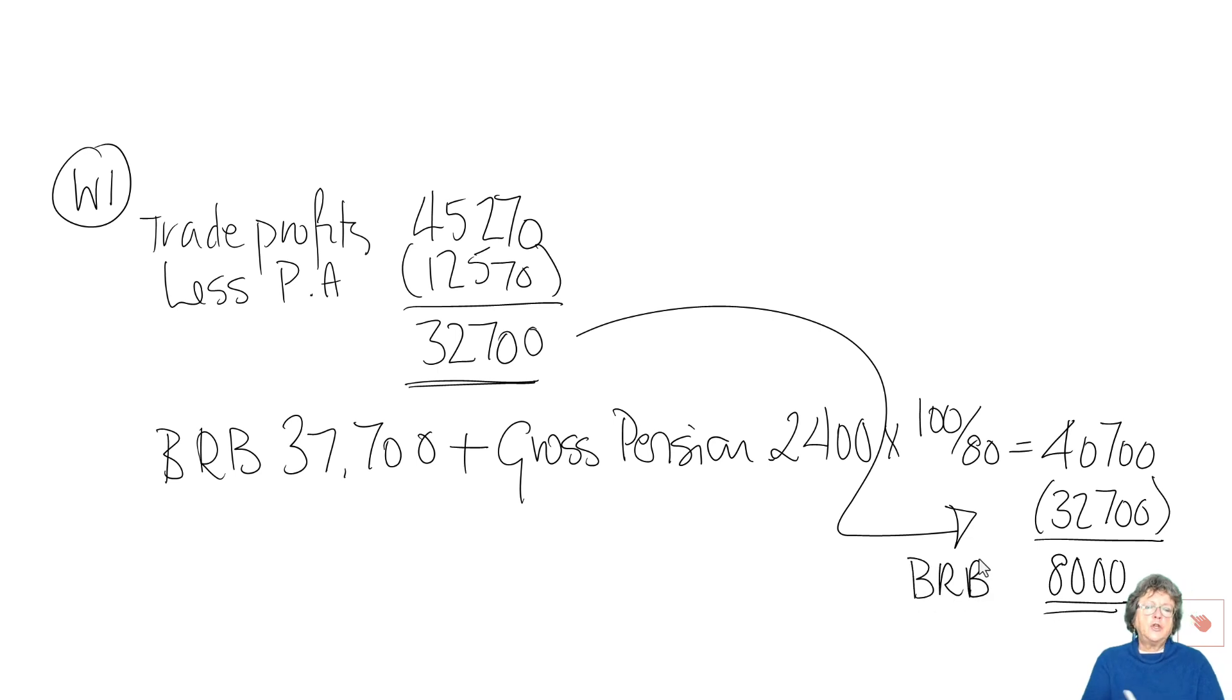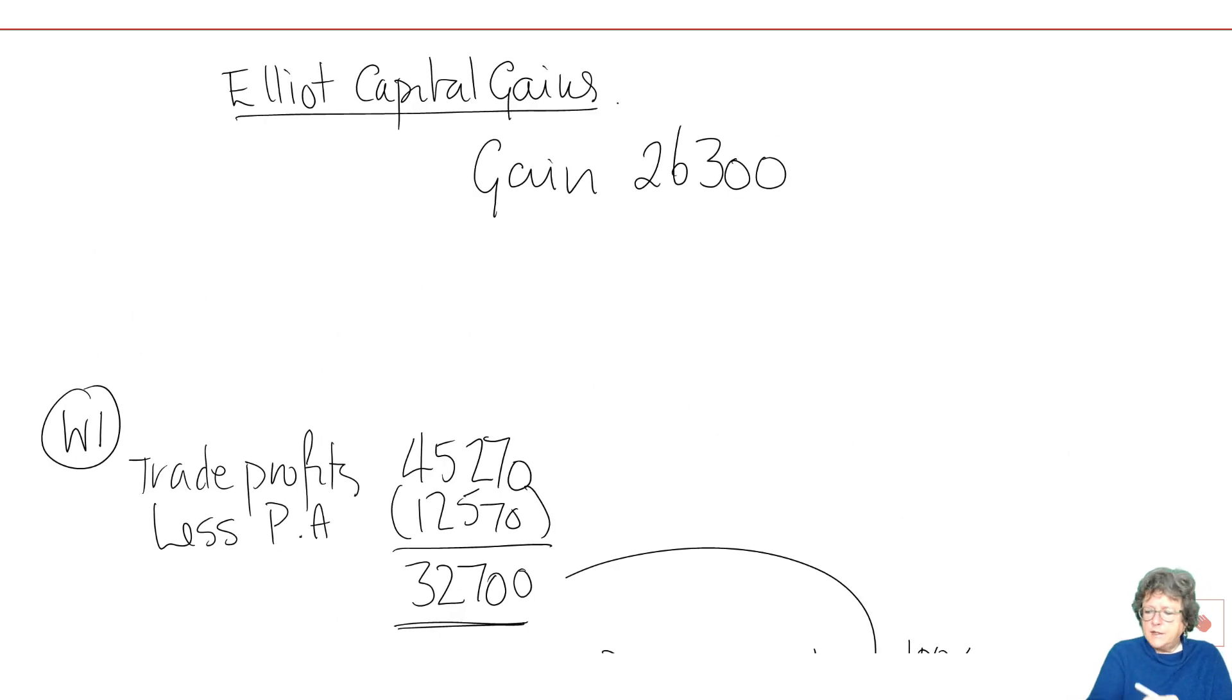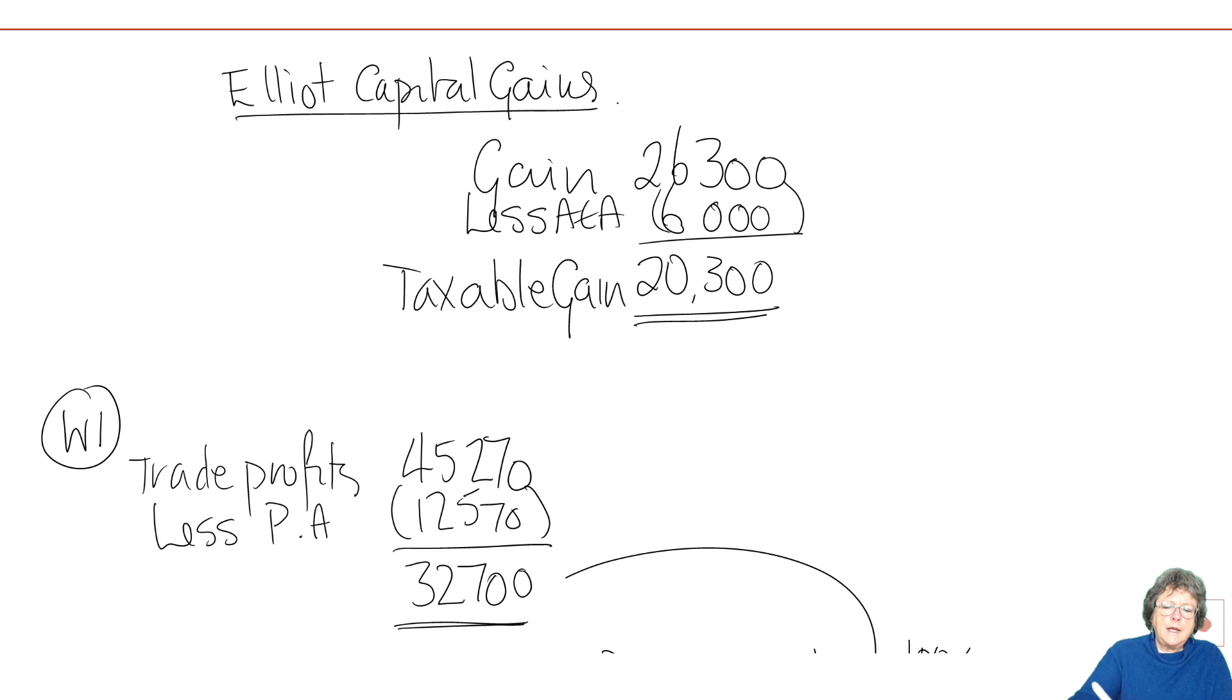Now you can see there's a lot of workings there. Show every working that you do because all of that's going to get you marks. One, you've extended the basic rate band, you've taken off the personal allowance and you've worked out how much basic rate band is left, a lot of marks potentially for that. OK so this is our gain position, we need to take off the annual exempt amount which is £6,000 which leaves us with £20,300. OK so that's our taxable gain.